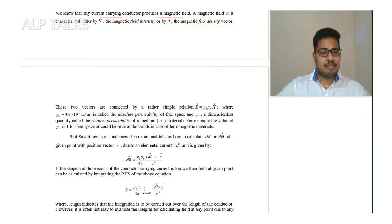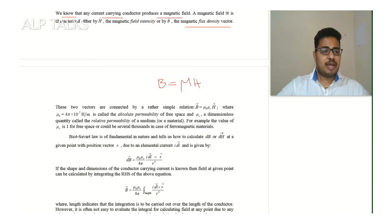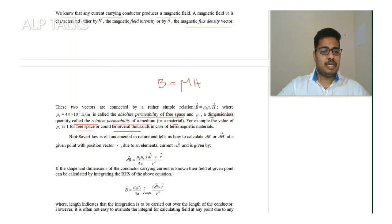These two vectors are connected by the relation B = μ₀μᵣH, generally written as B = μH. Here μ = μ₀μᵣ, where μ₀ = 4π × 10⁻⁷ henry per meter, called the absolute permeability of free space. μᵣ is a dimensionless quantity called the relative permeability of the medium or material. For free space, μᵣ = 1, and it could be several thousands for ferromagnetic materials — for CRGO core, it will be around 20,000.